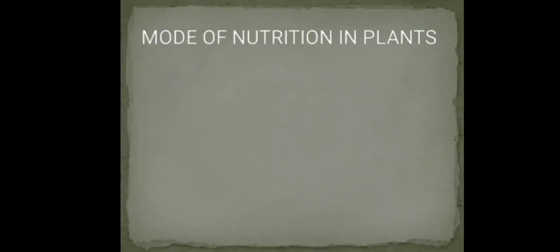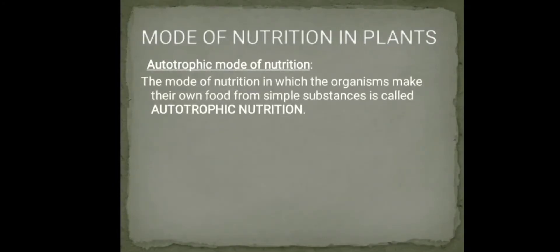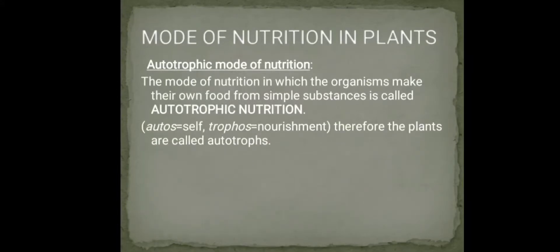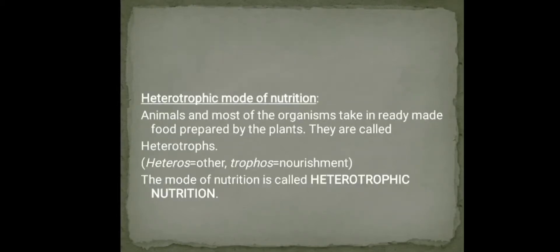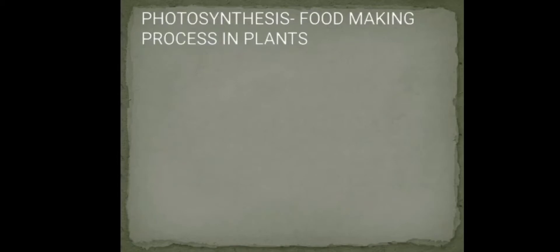Mode of nutrition in plants. The autotrophic mode of nutrition is the mode in which organisms make their own food from simple substances. 'Auto' means self and 'trophos' means nourishment, so plants are called autotrophs. In the heterotrophic mode of nutrition, animals and most organisms take in ready-made food prepared by plants and are called heterotrophs — 'hetero' means other.